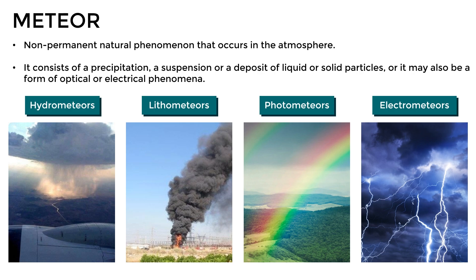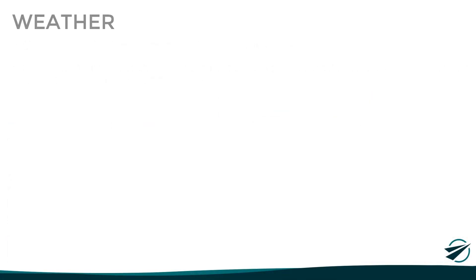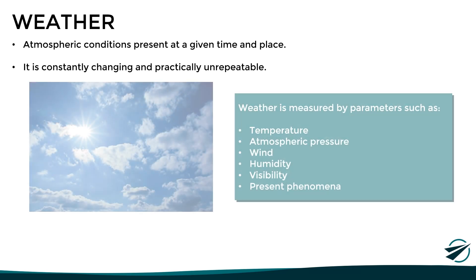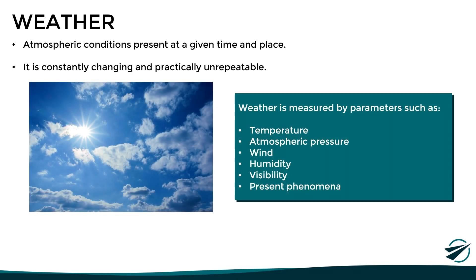Now that we know what meteors are and how they are classified, let's look at two important concepts. The first one is weather. Weather is defined as the set of atmospheric conditions present at a given time and place, which are constantly changing and practically unrepeatable. Weather is measured by parameters such as current temperature, pressure, wind direction and speed, humidity, visibility, and any present atmospheric phenomena.